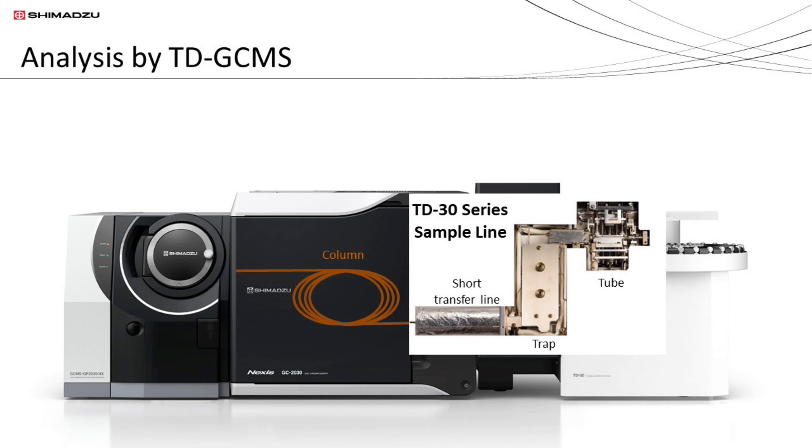Shimadzu thermal desorption system is connected to GC-MS through its short transfer line which minimizes dead volume. Additionally, the whole TD sample line, including the transfer line, can be heated with no cold points so that even highly adsorbent components can be analyzed with high sensitivity.